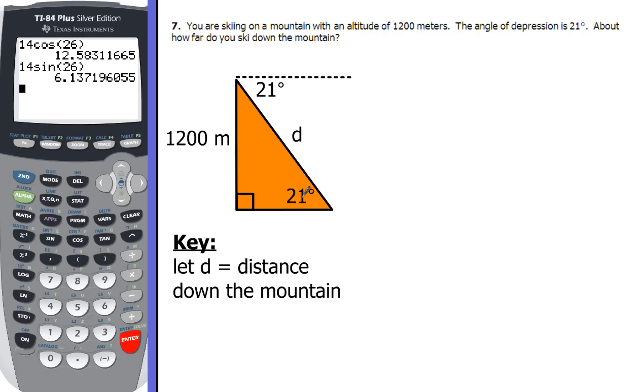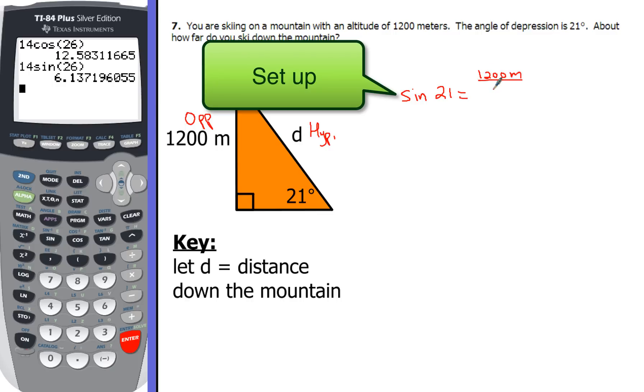So we're going to use a trig ratio now to figure out how long down the mountain we skied. So 21 is here, 1200 is opposite, so I'm going to write OPP over there, and then D is going to be our hypotenuse. So those are the two key pieces: we've got opposite and hypotenuse. Well what trig ratio uses that? Yeah, by now I think you're getting the hang of it. That's going to be sine. So we're going to have the sine of 21 degrees is going to be equal to the opposite, well that's 1200 meters over D, and I don't know what D is. So this is going to be four steps all together.